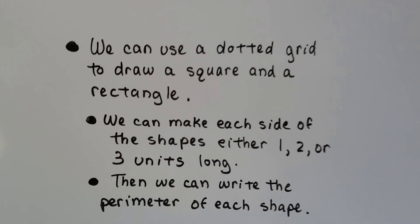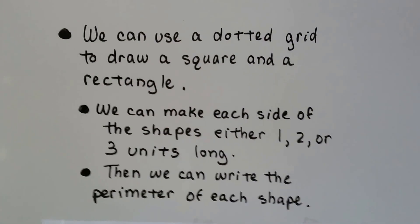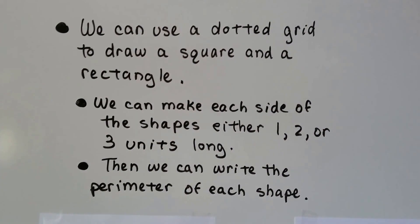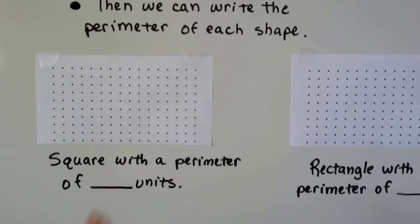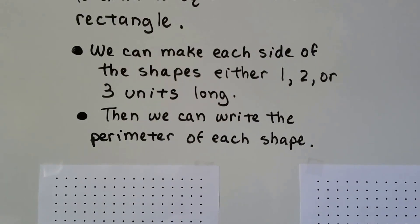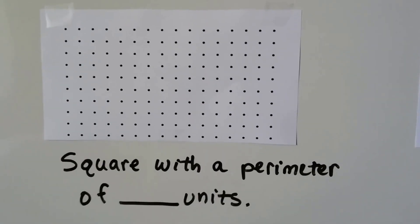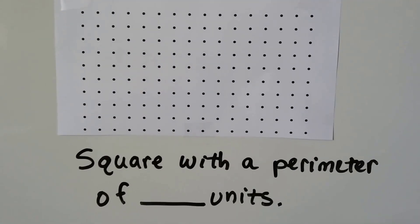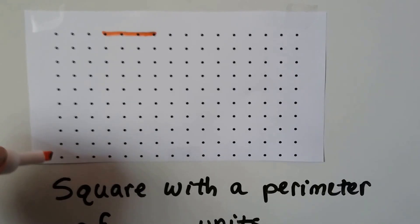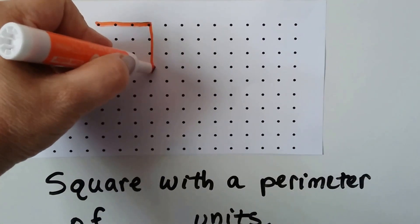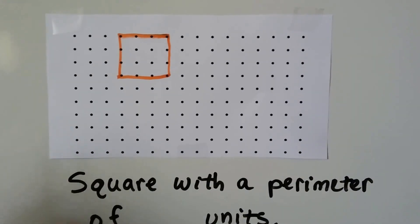We can draw a square and a rectangle on these dotted grids. We can use a dotted grid to draw a square and a rectangle, making each side of the shapes either one, two, or three units long, then write the perimeter for each one. A square has four sides that are all the same length. So if I make one side three units long, then every side has to be three units long — that's the definition of a square.